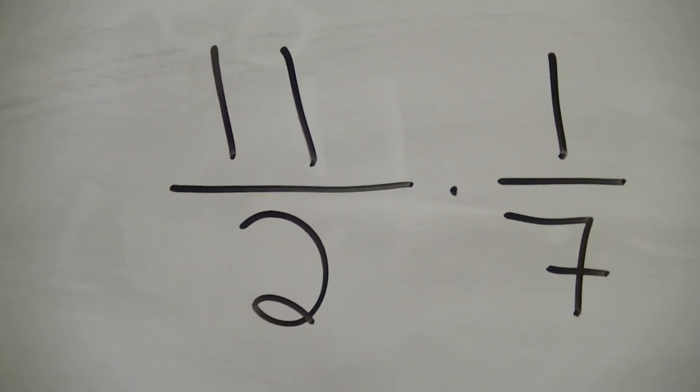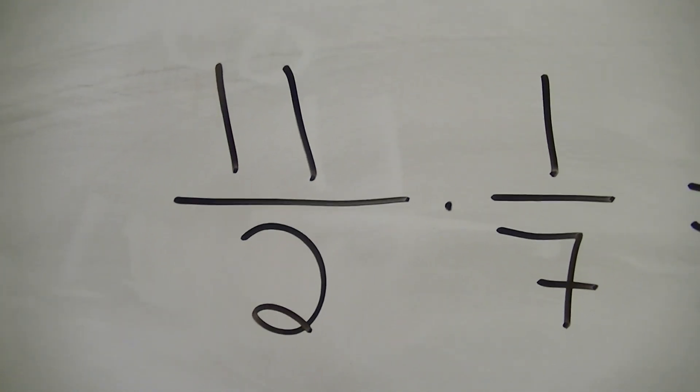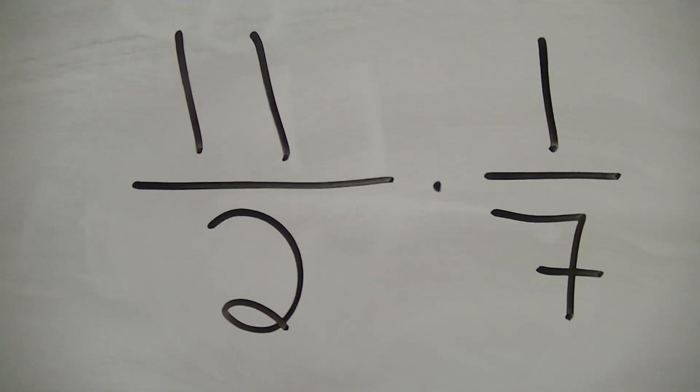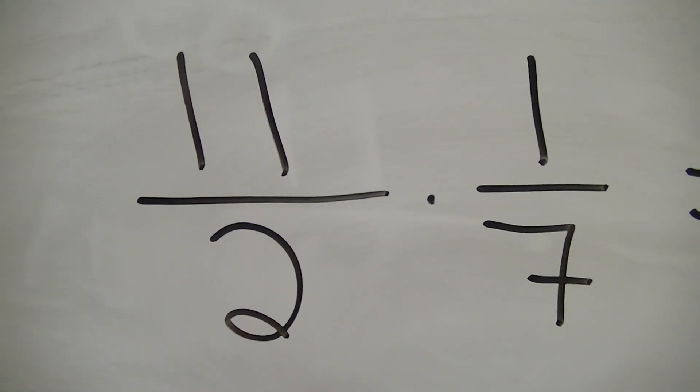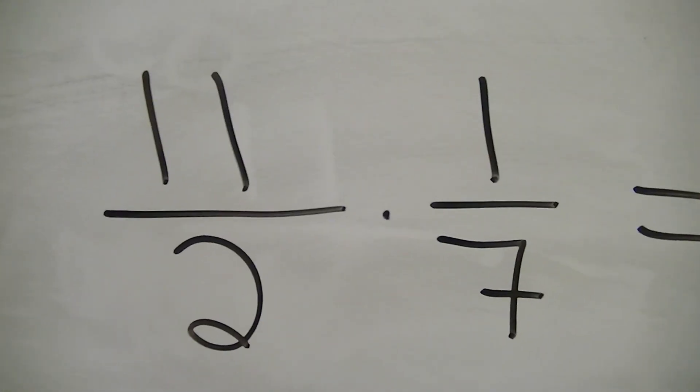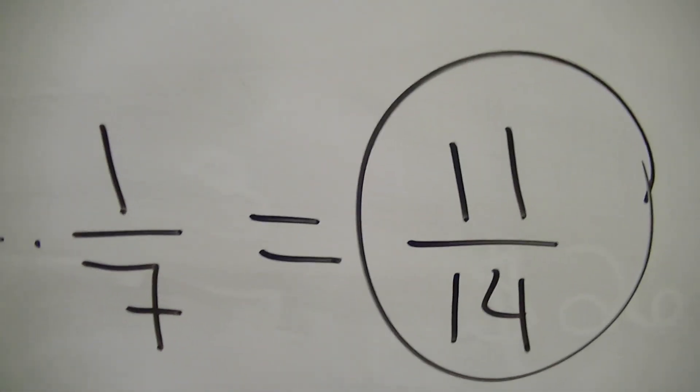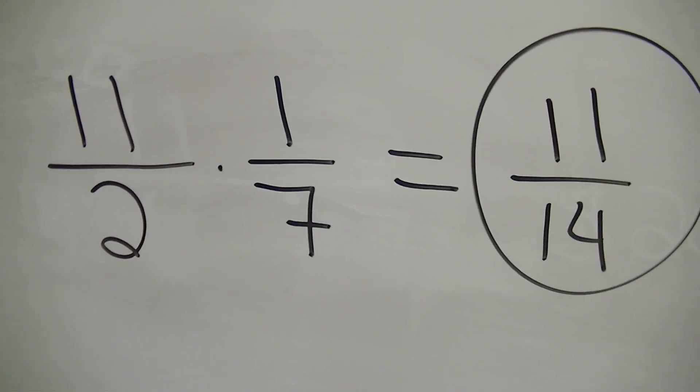11 over 2 times 1 over 7. Now, considering that we started with those big numbers, doesn't this sound a lot easier to handle? You betcha. So, now we just multiply straight across the top. 11 times 1 is 11, 2 times 7 gives us 14.